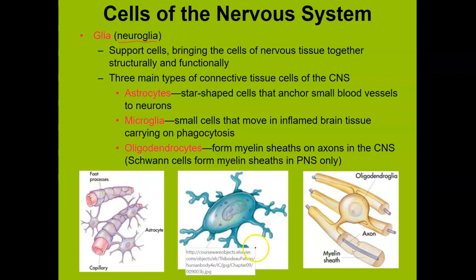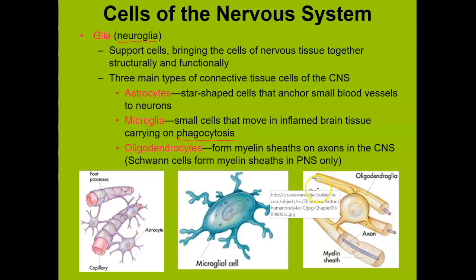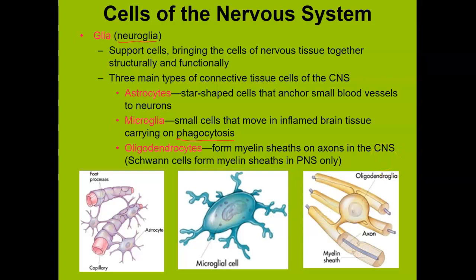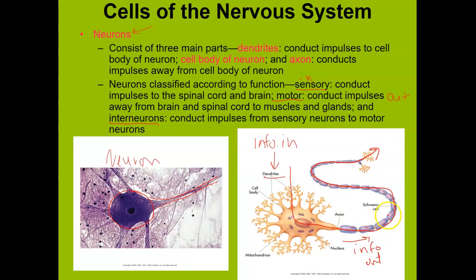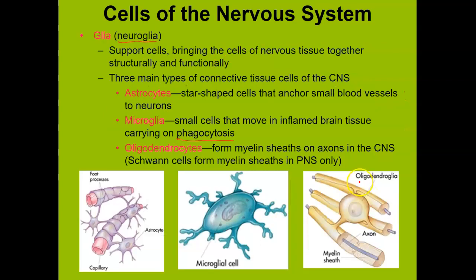We have microglia. Microglial cells are kind of like the white blood cells in the nervous system, but they're not actually white blood cells. They go around looking for junk in the brain — inflammation, dead cells — and they consume them via phagocytosis. The last type in the brain are the oligodendrocytes. Oligodendrocytes are the cells that make myelin along the lengths of axons in the brain. Myelin sheaths insulate neurons. Schwann cells are in the peripheral nervous system; in the central nervous system we have oligodendrocytes. Most people call them oligodendrocytes.